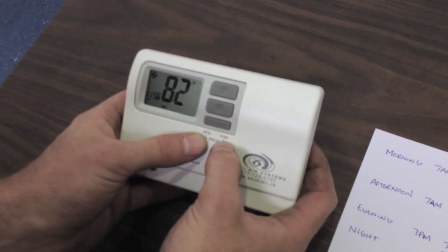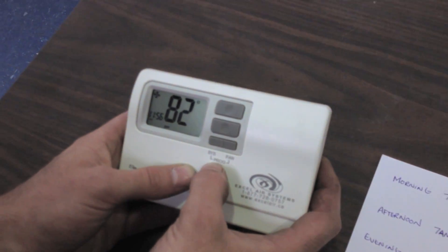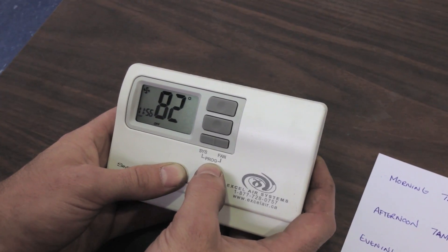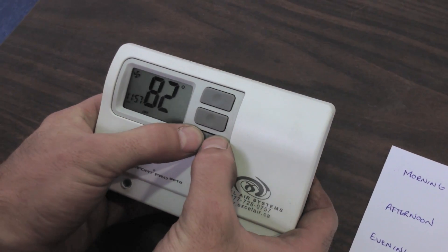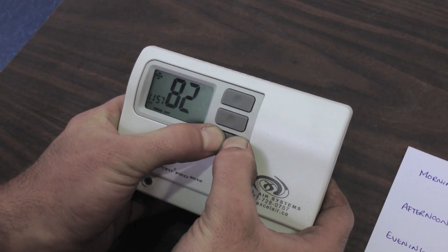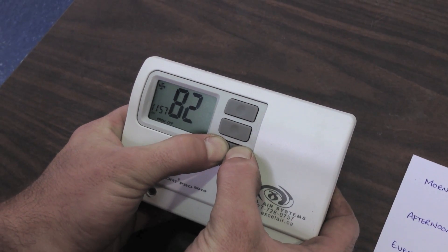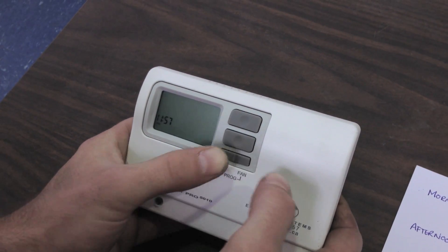Once in the off position, we're going to push and hold the system and fan button. Notice how it's highlighted to P-R-O-G, which stands for program. We're going to push and hold both buttons until the screen display changes. There we go.